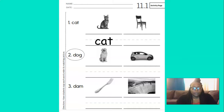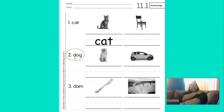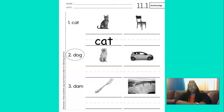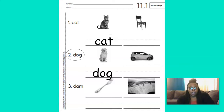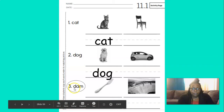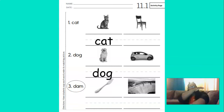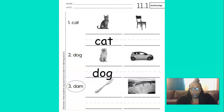Let's go to the next one. We have to blend the sounds in this word. Remember, when we blend we start from left to right. D-O-G. Dog. This word is dog. Let's put the word dog underneath the dog picture. All right, let's move on to the next one. Let's blend the sounds here, starting with the letter on the left. D-A-M. Dam. The word is dam. Let's put the word dam under the picture. Nice job blending.